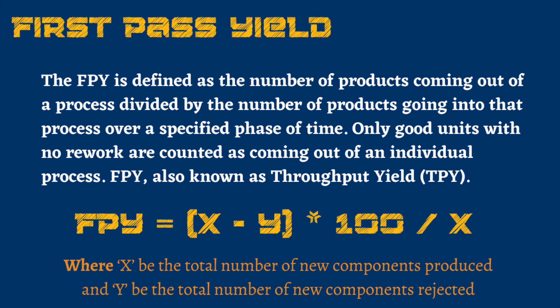As you can see on my screen, the formula is x minus y divided by x, multiplied by 100 — we multiply by 100 because we need the percentage. Here, x is the total number of new components produced, and y is the total number of new components rejected.